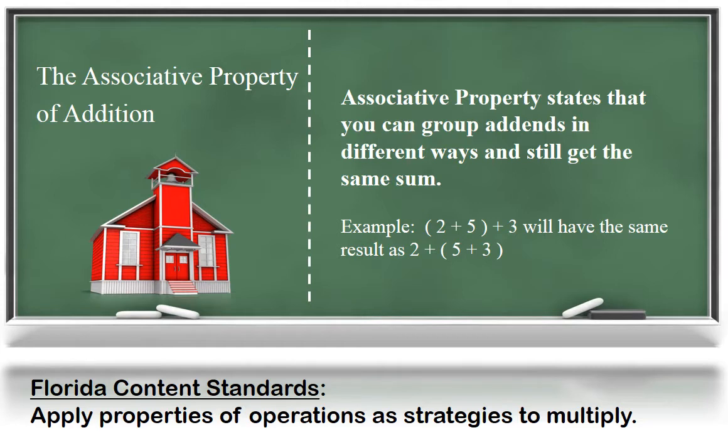Now we're going to move on to the associative property. Your child already learned the associative property of addition in Unit 1. Now they will apply what they know about the associative property to multiplication. The associative property states that you can group addends in different ways and still get the same sum. For example, two plus five then plus three will have the same result as two plus five plus three.